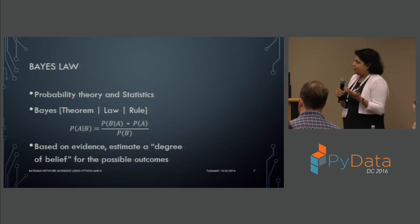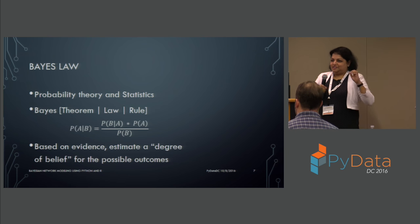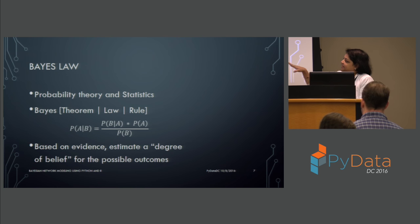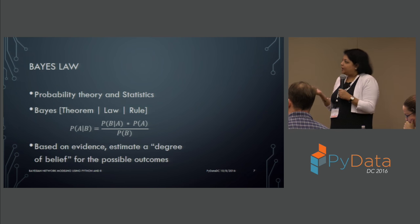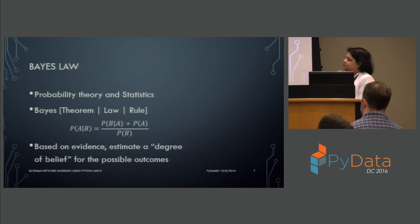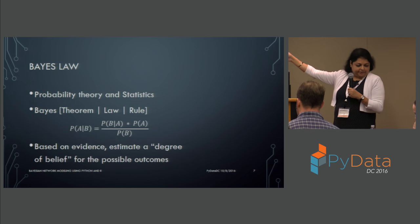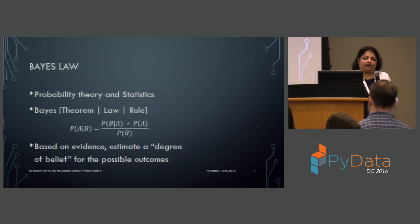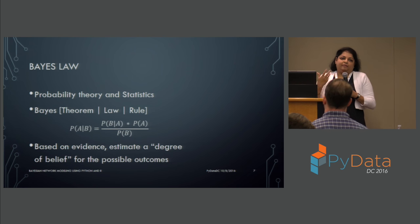Let's start from the beginning with Bayes' law. There are very few equations in this presentation. What we are looking at is Bayes' theorem, also called Bayes' law or Bayes' rule — they are interchangeable. What it tells you is the probability of A given B, written P(A|B). That means: what is the probability of A occurring given that B has already occurred? You have information about B — how do you leverage that to better understand A?